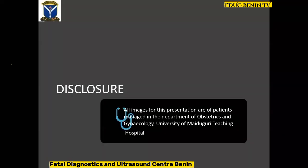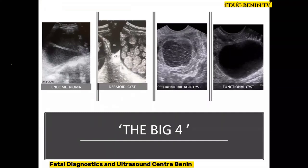All the images used for this presentation are cases managed in the Department of Obstetrics and Gynecology of University of Medjugorje Teaching Hospital. In some literature, they call the common lesions the Big Five; others call it the Big Six. I call it the Big Four. These are: functional cysts, hemorrhagic cysts, dermoid cysts, and endometrioma — the Big Four lesions we should be conversant with at the end of this webinar.